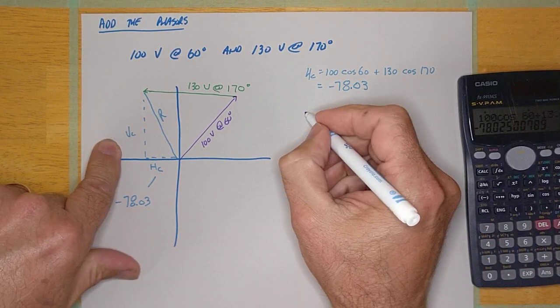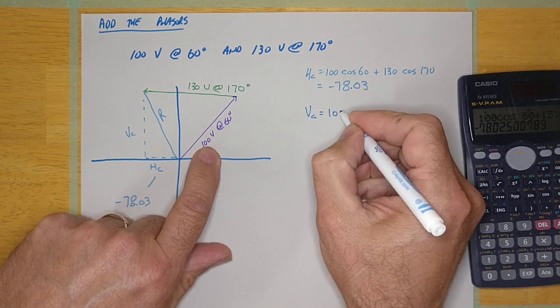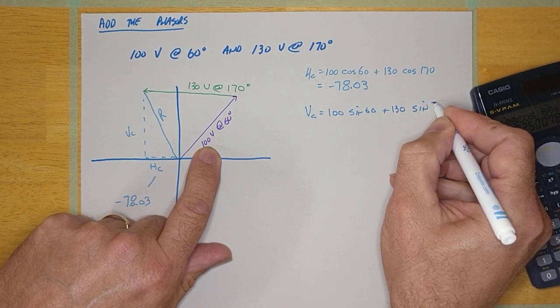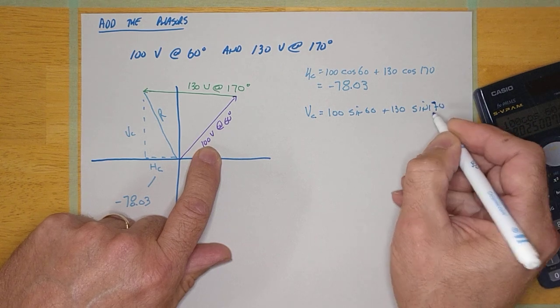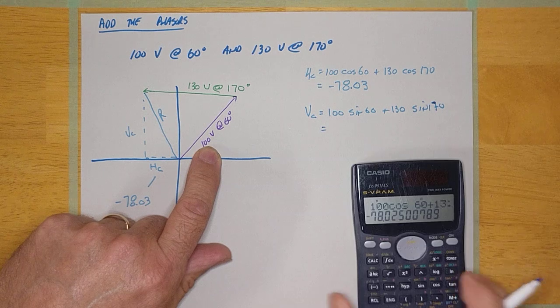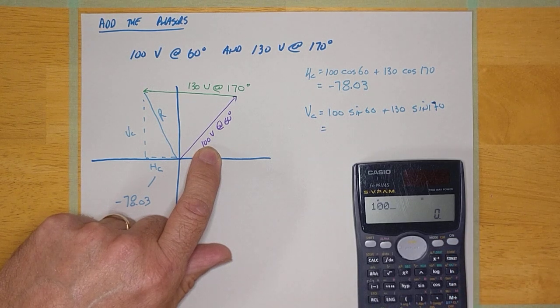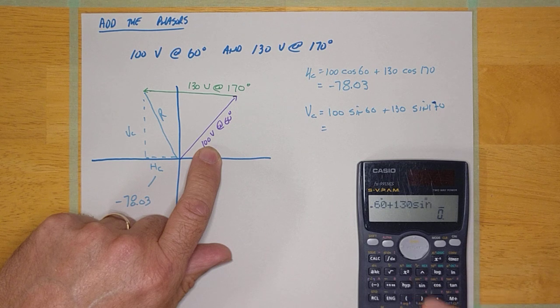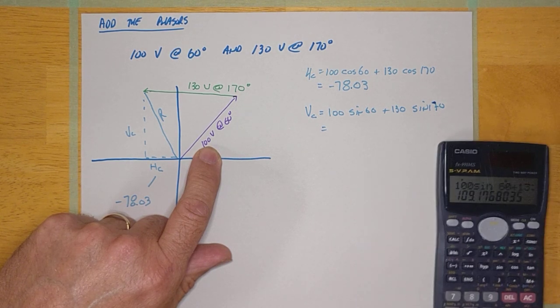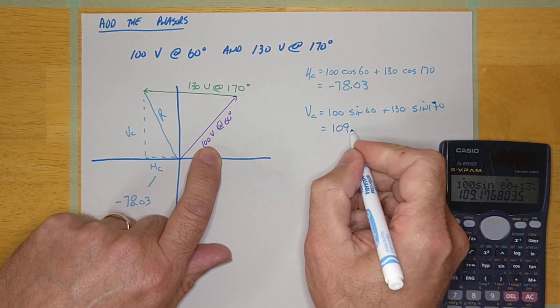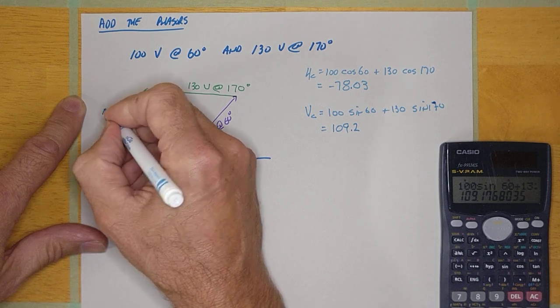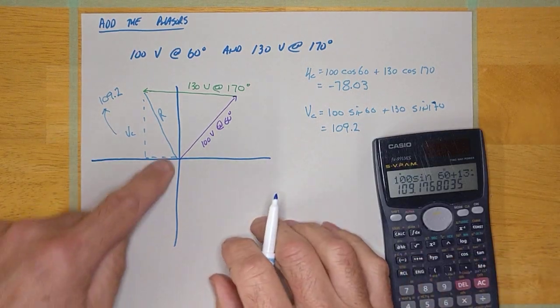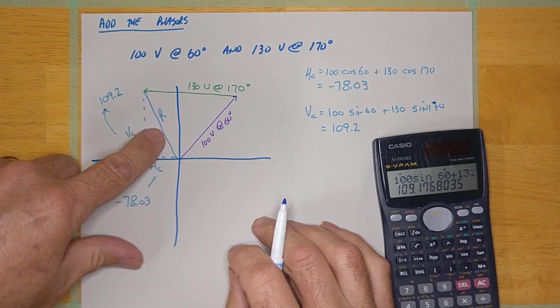The vertical component, I'm going to calculate as well. It's going to be phasor 1 sine of its angle plus phasor 2 sine of its angle. Sine 170. So I'm going to pound this into my calculator carefully because this is where a lot of mistakes get made when you're hammering all this stuff in. It's coming out to 109.2. And that is right here, 109.2. These don't usually have units, they're just numbers. We don't care about them that much except for they help us to calculate the result.